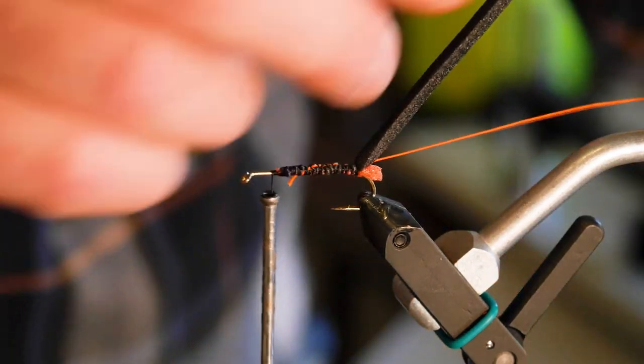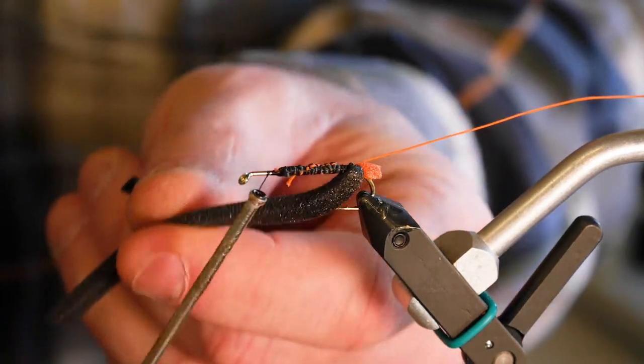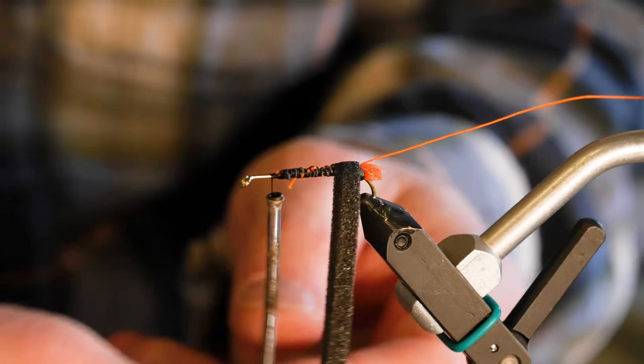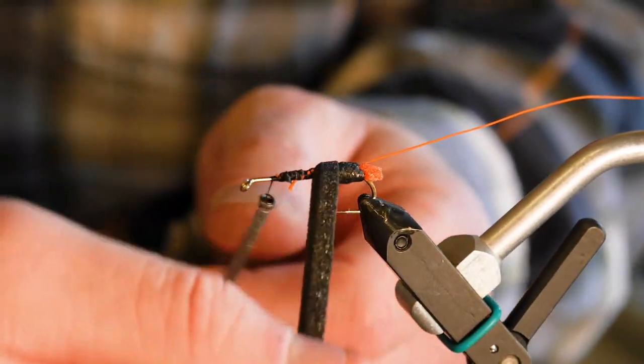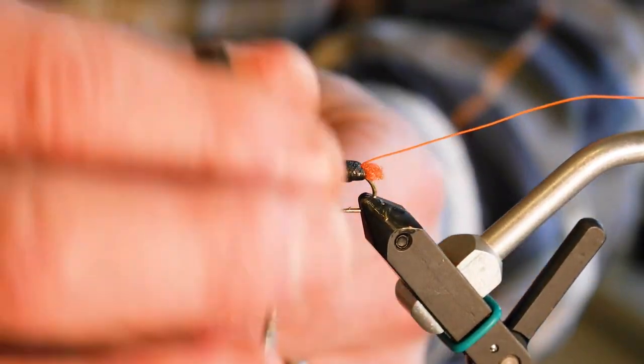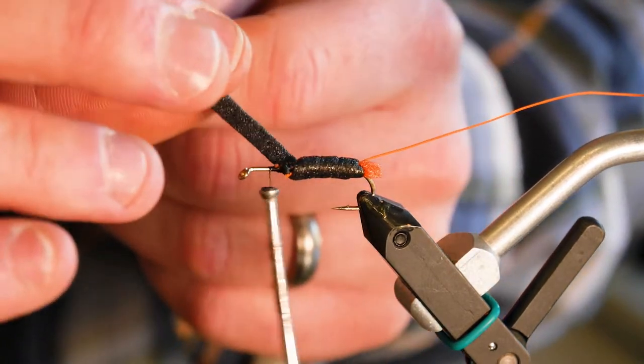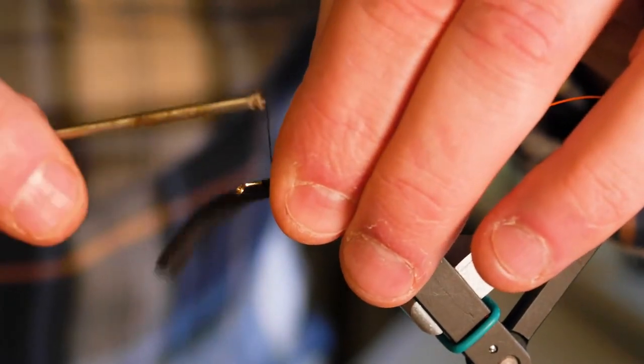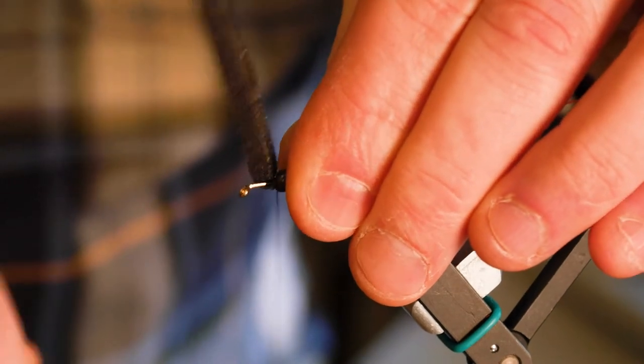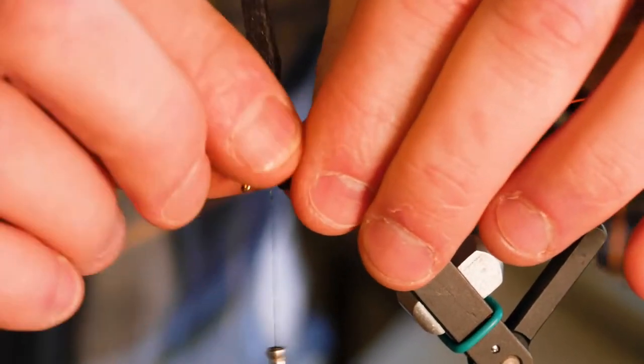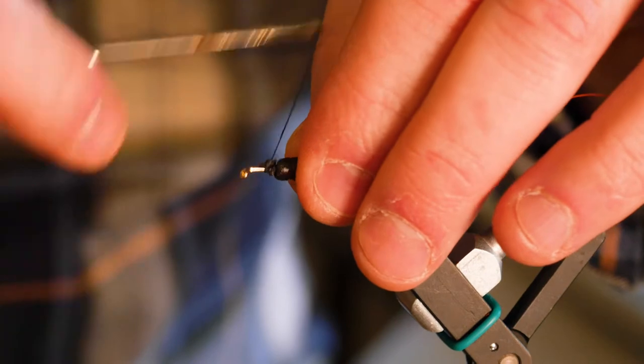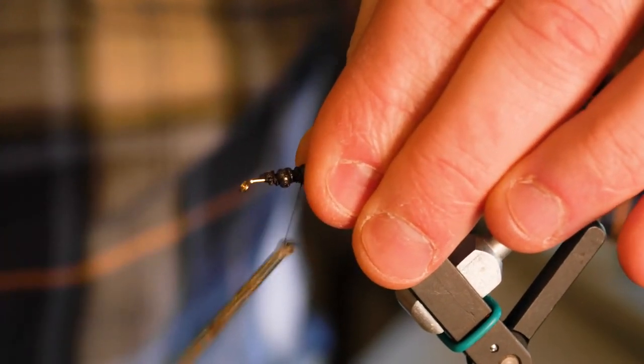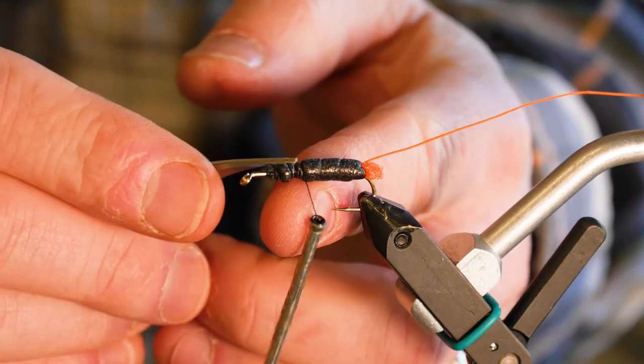We'll take the black foam and wrap it. You're not pulling tight. These are just snug wraps. One right next to the other. You don't want them on top of each other. Just right next to the other. I got four wraps in there. And I'll actually wrap back over this a little bit. Tie it off. You can cut the foam, break it. It doesn't matter.